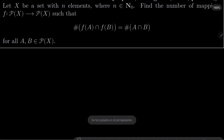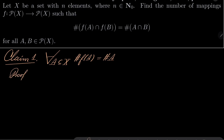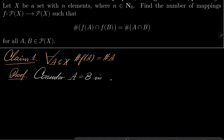All right, so I will prove several claims. Claim number one: for any subset A of x, the cardinality of f(A) equals the cardinality of A. Proof is trivial — consider A equal to B in this equation, which I mark asterisk, and this closes the proof.